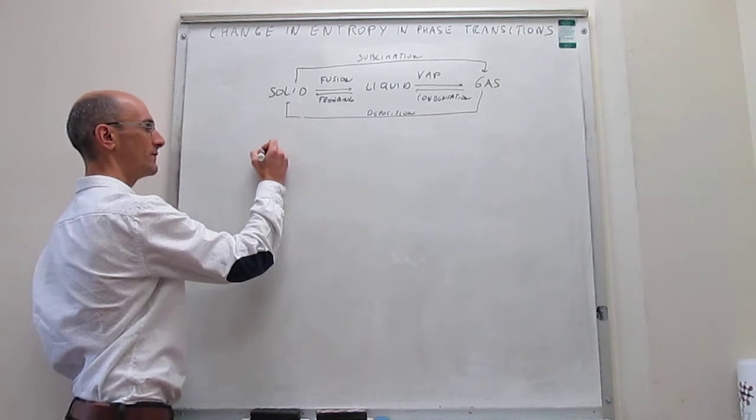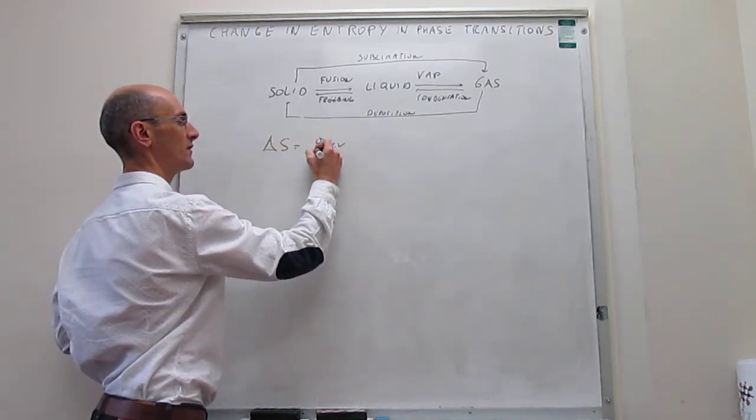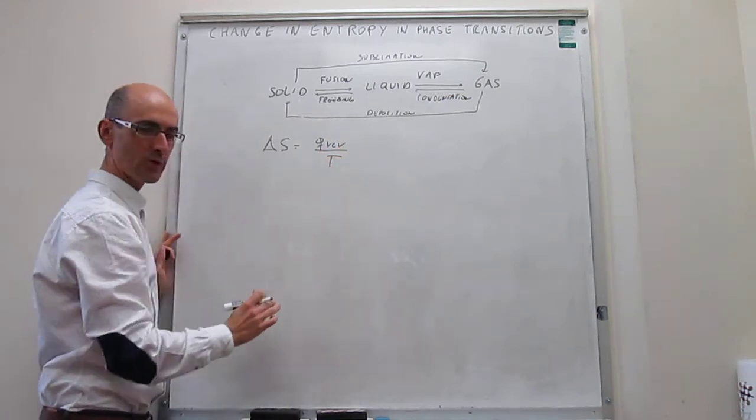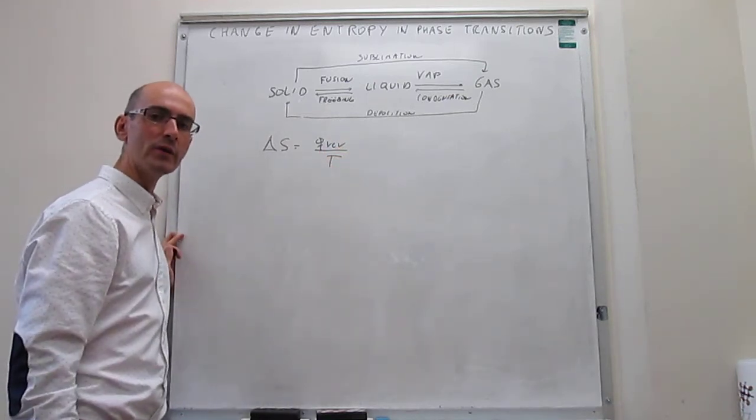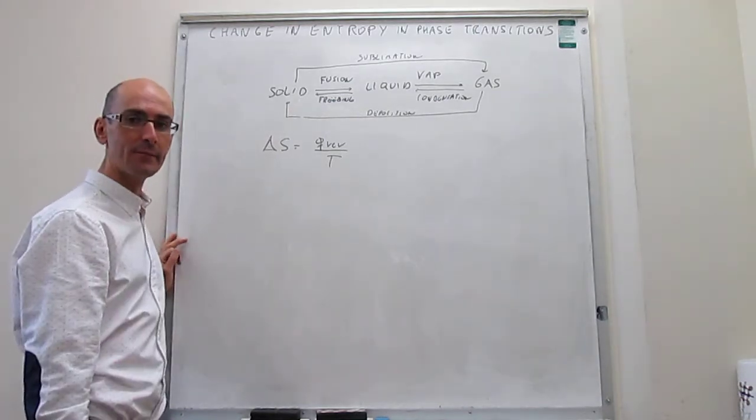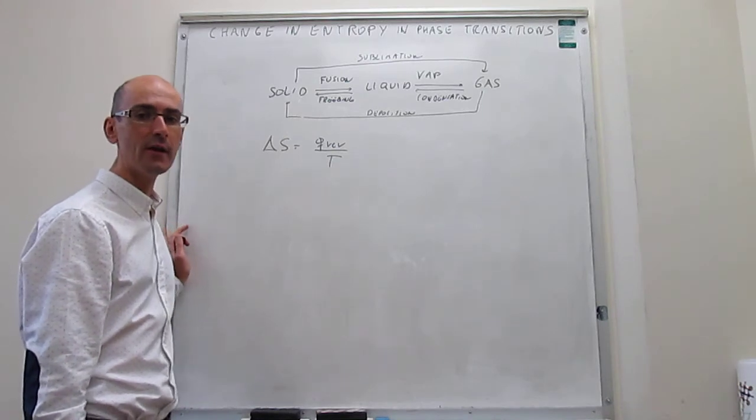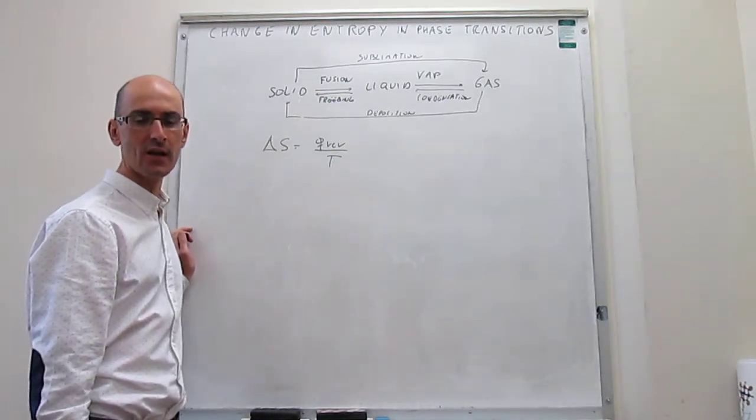Well, the general definition for the change in entropy is the reversible heat over the temperature. This equation applies well when you have an isothermal process. And phase transitions are processes that are isothermal. They're also isobaric, which means that there is constant pressure.